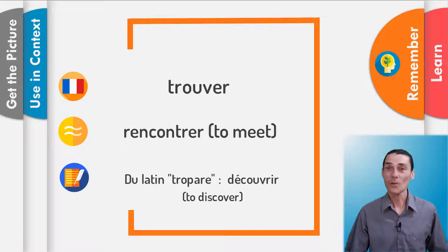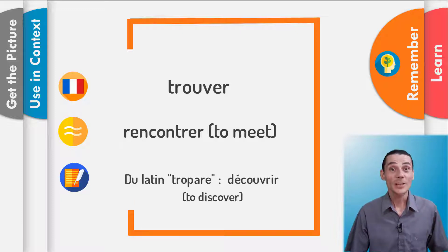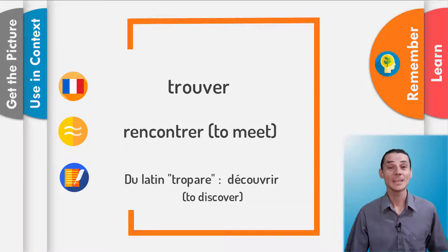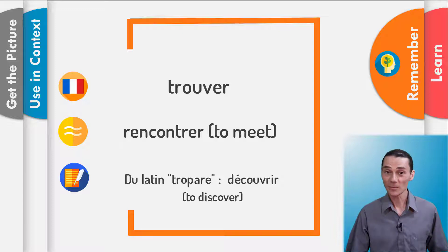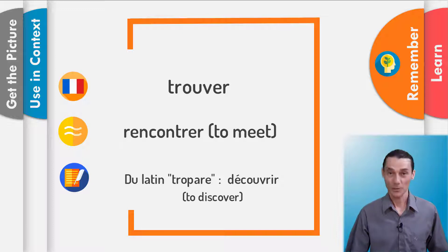One other way to remember a word is to know where it comes from. Here, it comes from a Latin root. This Latin root is tropparer — découvrir — to discover. Tropparer. Découvrir. To discover. Découvrir is similar with rencontrer, and similar with tromper.